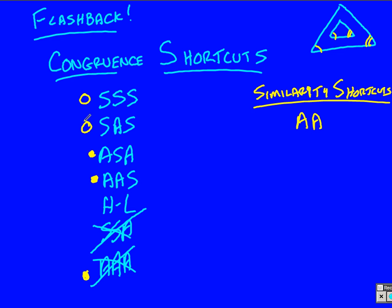Now, these other two, side-side-side and side-angle-side, guess what? Those are the exact same for similarity, except instead of the sides needing to be congruent, the sides just need to be proportional. So that's our three similarity shortcuts that we're going to end up using here.